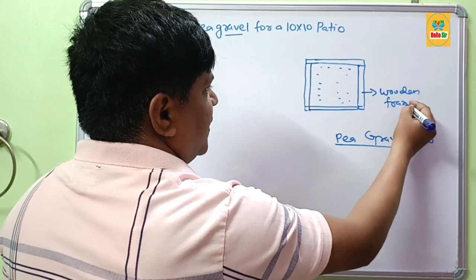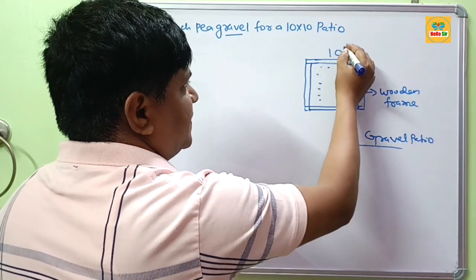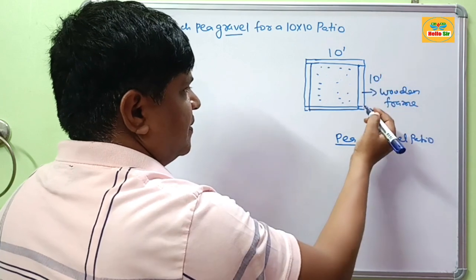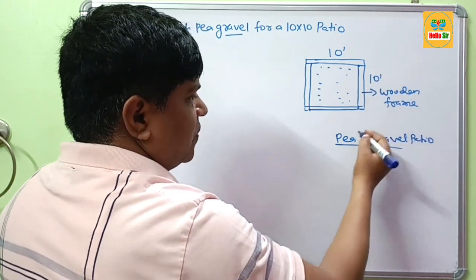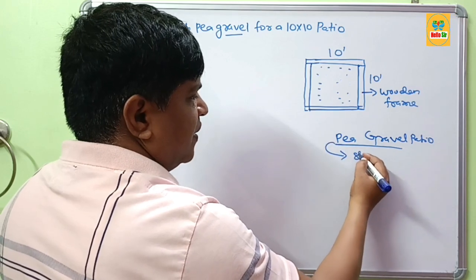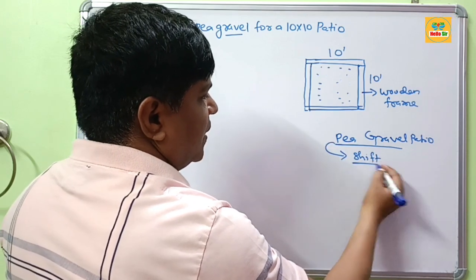This one is wooden frame. This side is 10 foot, this side is 10 foot. Why is it necessary to cover with wooden frame? Because the big gravel can shift to other sides.